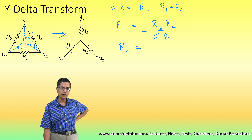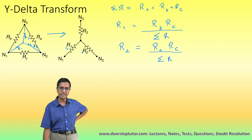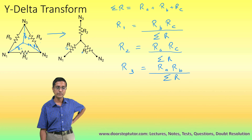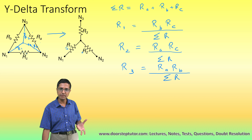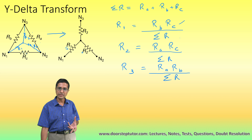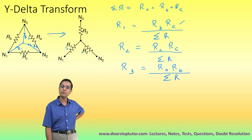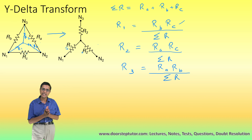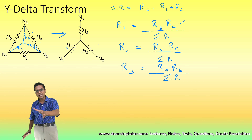Similarly, R2 comes out to be Ra·Rc divided by the sum of all resistances (Ra + Rb + Rc), and R3 equals Ra·Rb divided by the sum of all resistances. So provided I choose R1, R2, and R3 in this format — calculating them from Ra, Rb, Rc this way — and then replace my delta network with the corresponding star network, the two networks are exactly equivalent. The proof of how these formulas come about will be shown in another video.